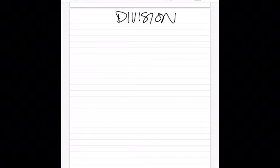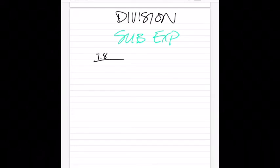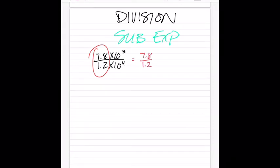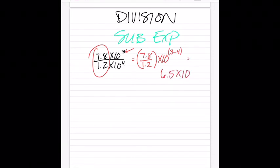Last operation is division. The rule for division is to subtract the exponents. Example: 7.8 times 10 to the third, divided by 1.2 times 10 to the fourth. Pull out the big numbers: 7.8 divided by 1.2, and subtract exponents: 3 minus 4. That gives 6.5 times 10 to the negative first.